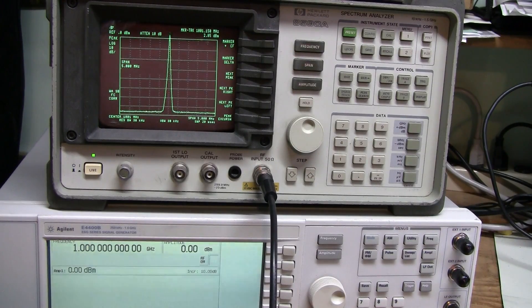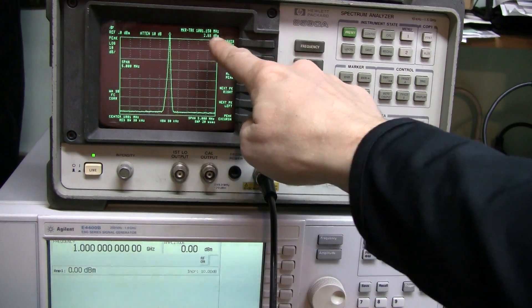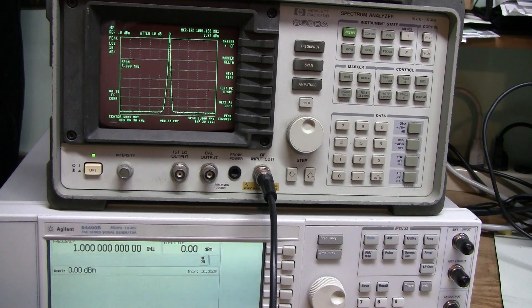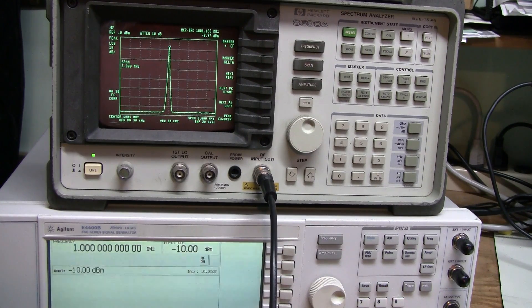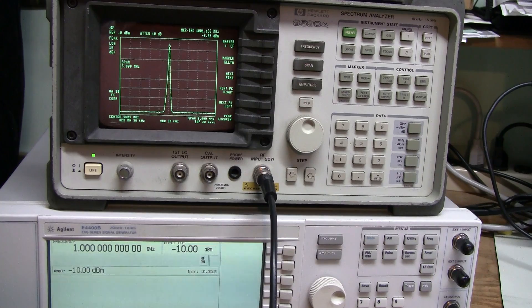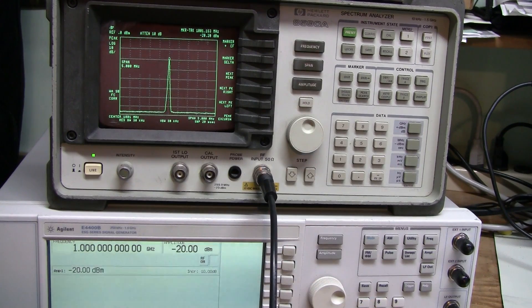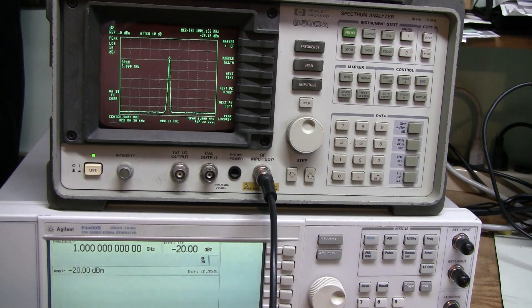This is 1 GHz 0 dBm signal. And the reading here is slightly higher. About 2.5 or almost 3. Let's try minus 10. It is about minus 9. Let's try minus 20. This one is quite close.